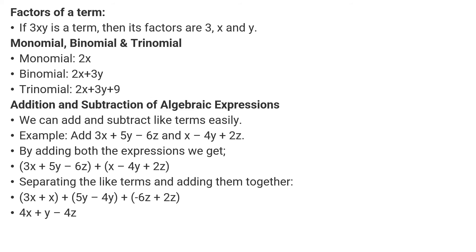Let's understand certain concepts with respect to algebraic expressions. You are given an example: 3xy. This is a term. To find the factors of a term, you split it into different subterms — so 3xy could be split into 3x and y. These are known as factors. Another example: monomial term 2x, binomial term 2x + 3y, and trinomial term 2x + 3y + 9. In the case of a monomial we have one term, binomial has two terms, and trinomial has three terms.